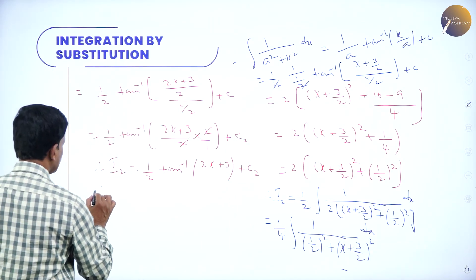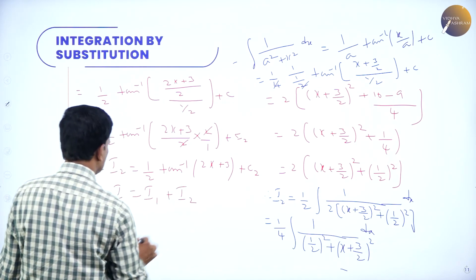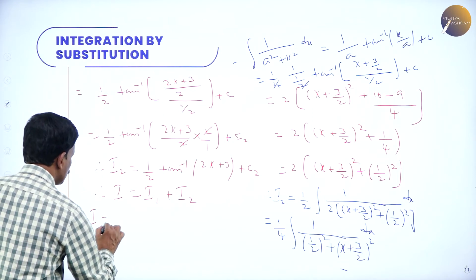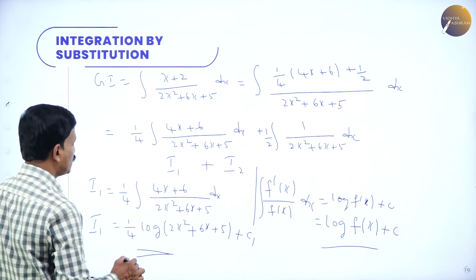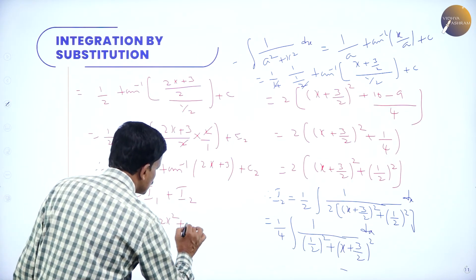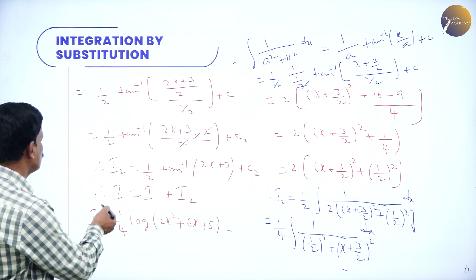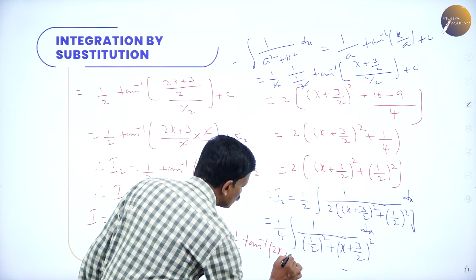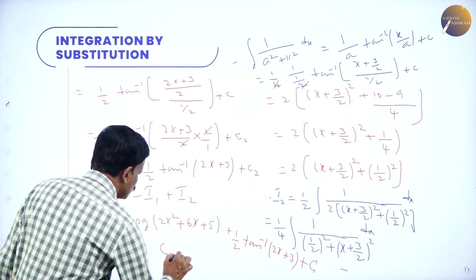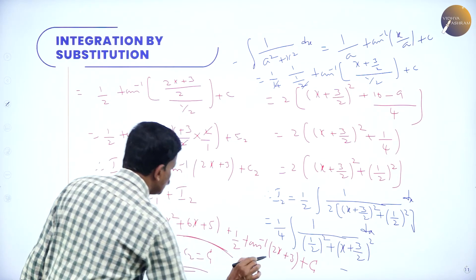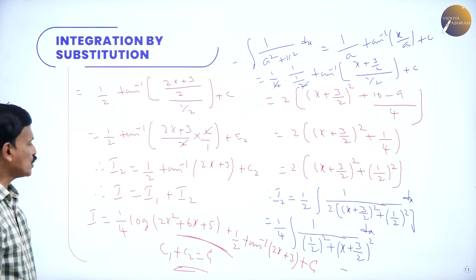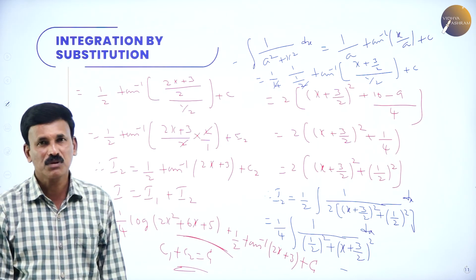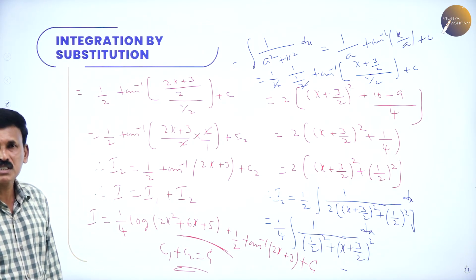Therefore the required integral I = I1 + I2 = (1/4) log|2x² + 6x + 5| + (1/2) tan⁻¹(2x + 3) + c, where c = c₁ + c₂. This is the required answer. The given integral is (1/4) log(2x² + 6x + 5) + (1/2) tan⁻¹(2x + 3) + c. This is a 6-mark question — very important and very easy, but the steps are more.